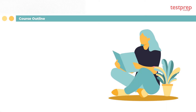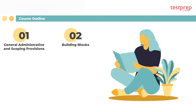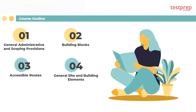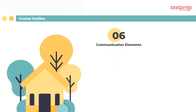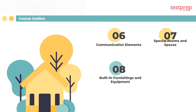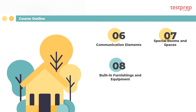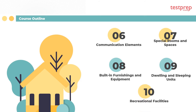Course outline: One, general administrative and scoping provisions. Two, building blocks. Three, accessible routes. Four, general site and building elements. Five, plumbing elements and facilities. Six, communication elements. Seven, special rooms and spaces. Eight, built-in furnishings and equipment. Nine, dwelling and sleeping units. Ten, recreational facilities.